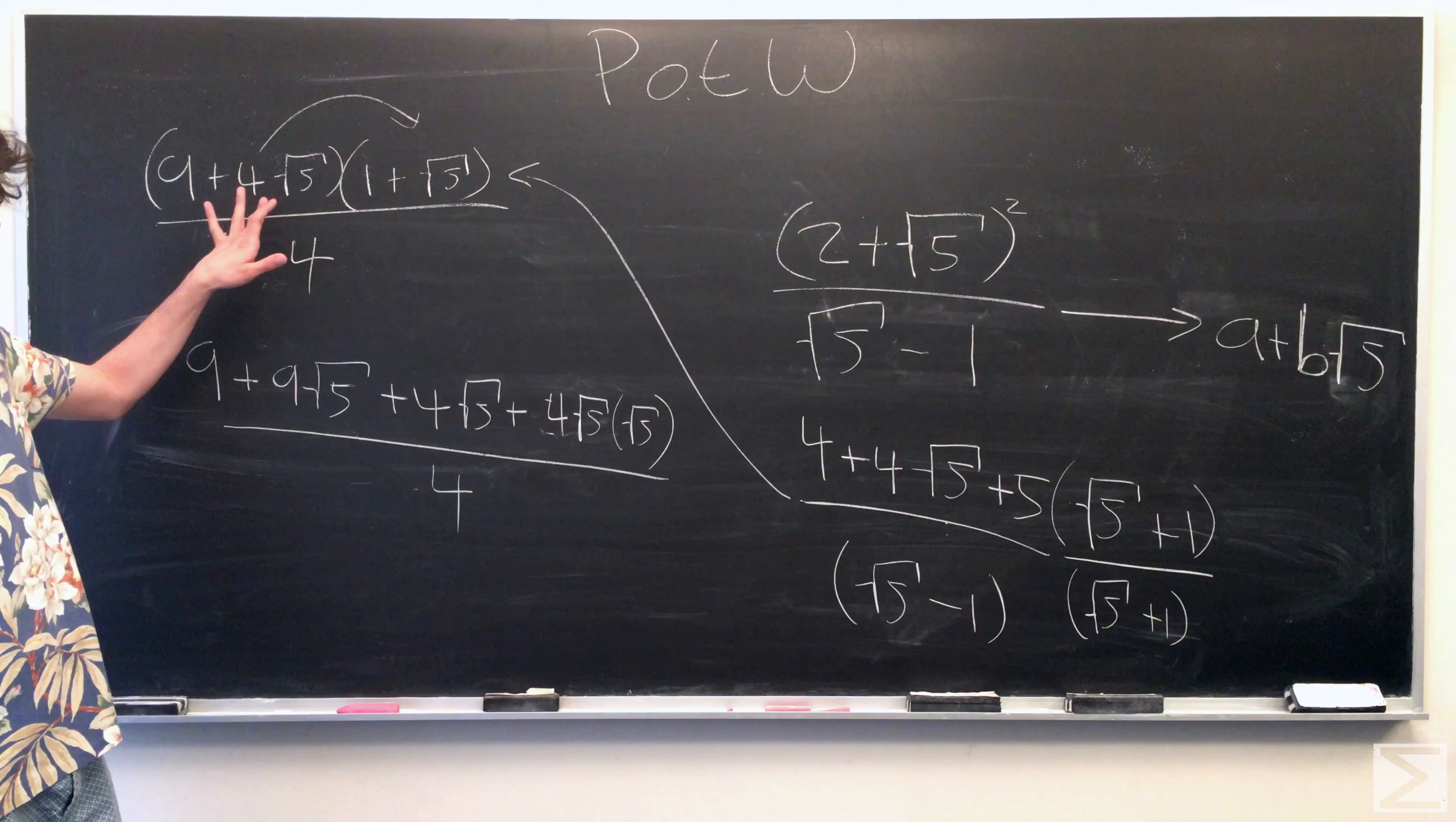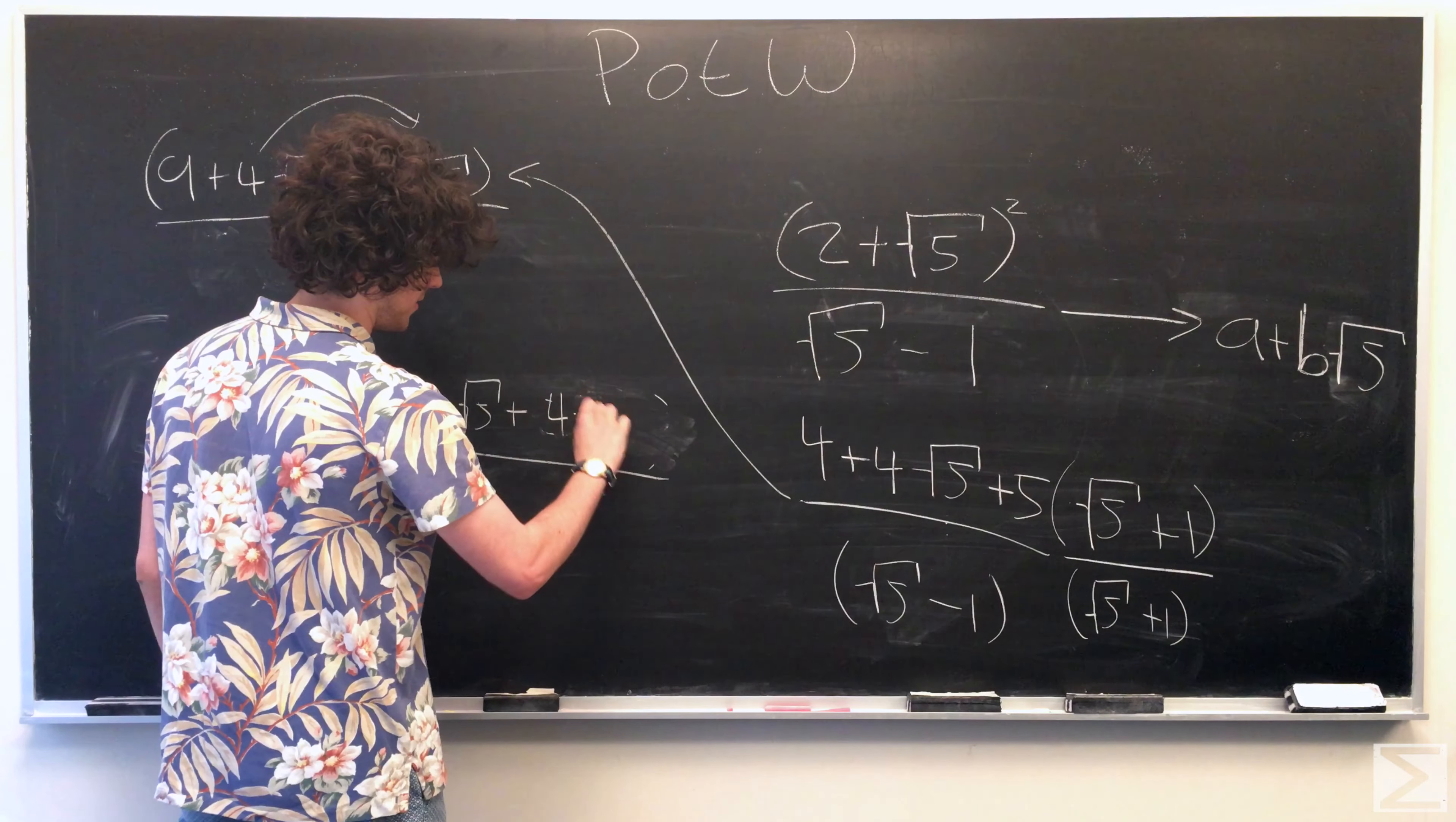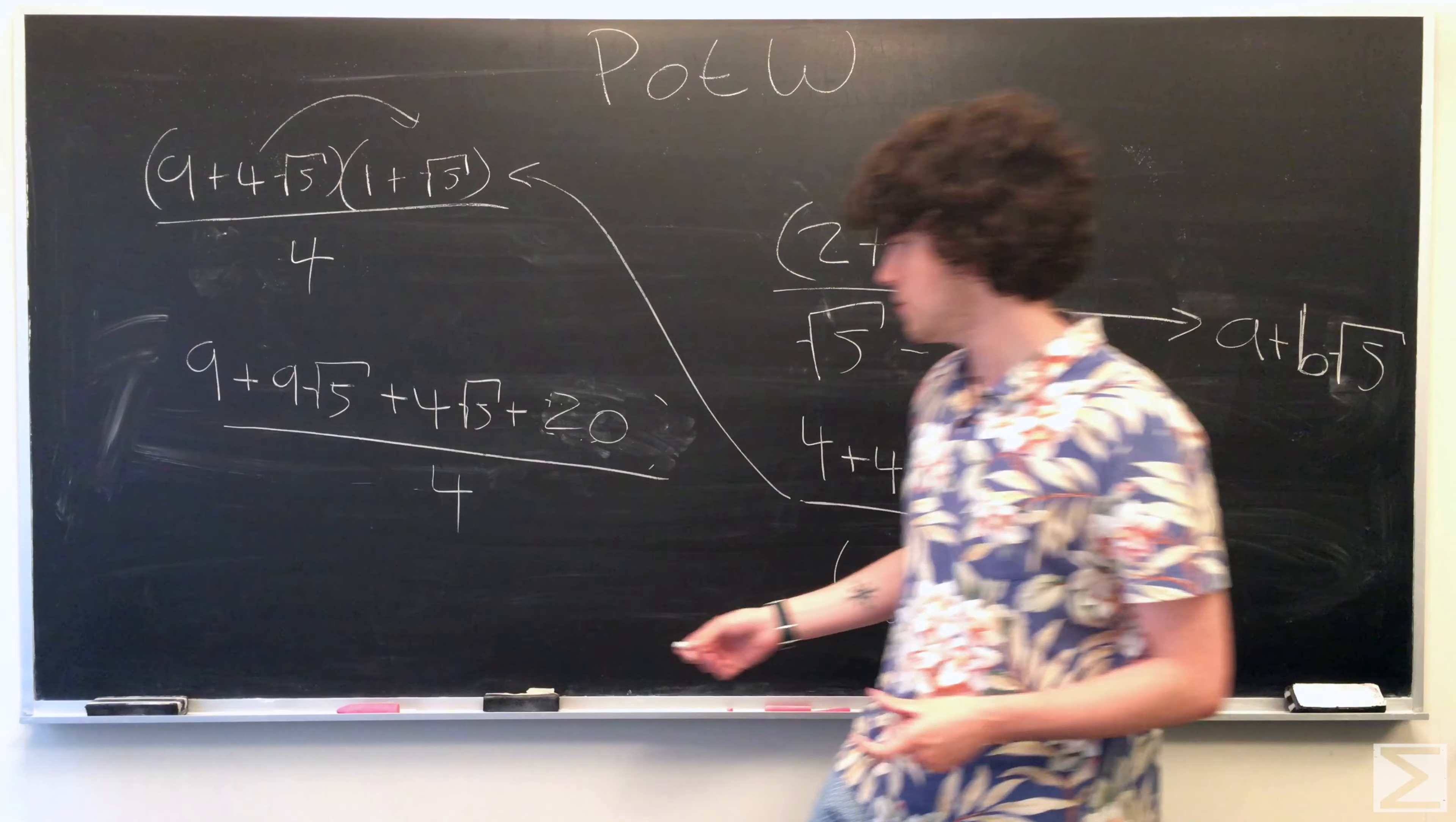And I've written this last term here a little. I haven't simplified it at all so you can see it better. We're just multiplying 4 root 5 by root 5. So these root 5s, that's just multiplied by itself, are going to return 5. 4 times 5 is 20. And now again, we can combine like terms and get 29 plus 13 root 5 over 4.